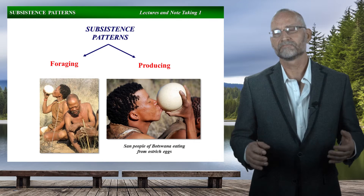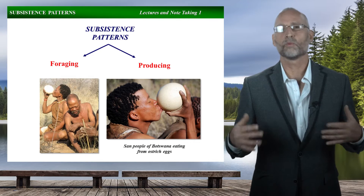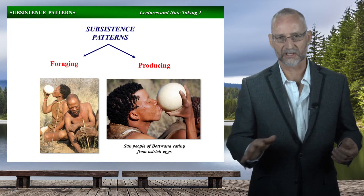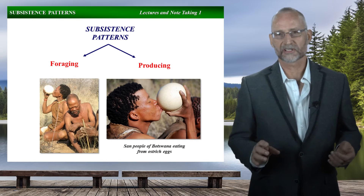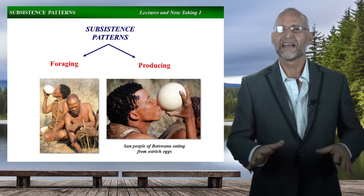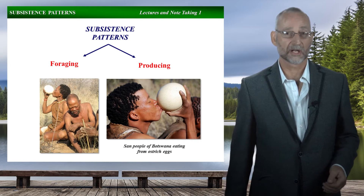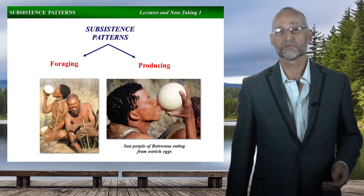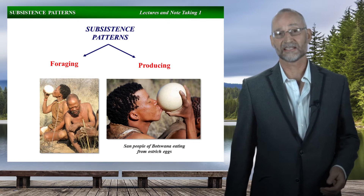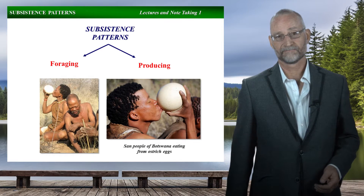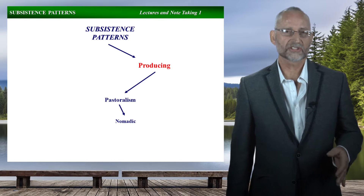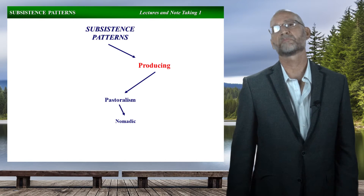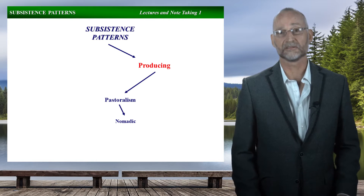If you're talking about wild plants or animals, then it's not production — that's foraging. That's like the San people of Botswana, who gather insects and fruits along with ostrich eggs for their diet. So with production, we raise or grow domestic plants and animals, and that's a big deal.